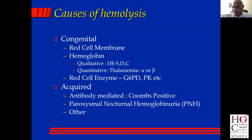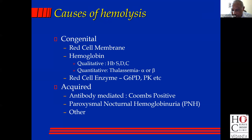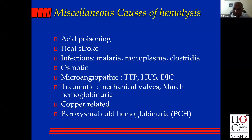What are the acquired causes of hemolytic anemia? One is antibody-mediated, and that is the Coombs test. If the Coombs test is positive, then you're dealing with an acquired hemolytic anemia which is antibody-mediated. If the Coombs test is negative, then the other condition you must keep in your mind is paroxysmal nocturnal hemoglobinuria. Most of the other acquired causes are apparent because of the condition in which they occur — acid poisoning, heat stroke, infections like malaria, mycoplasma, osmotic lysis after a prostatectomy if distilled water was used instead of saline for the transurethral resection.